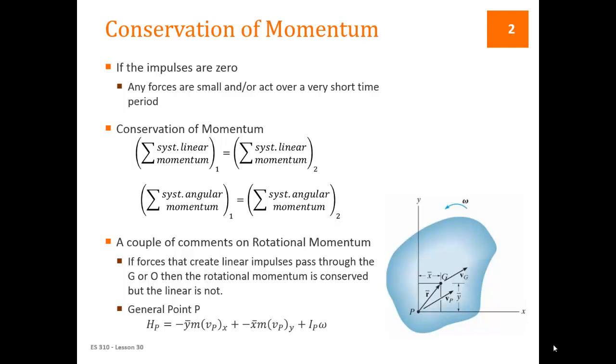A couple of quick comments on rotational momentum. If there are forces on an object that create linear impulses but happen to pass through the center of gravity or a fixed point on the object, then the rotational momentum is conserved but the linear momentum is not. So we have this equation that is applicable whereas these are not.